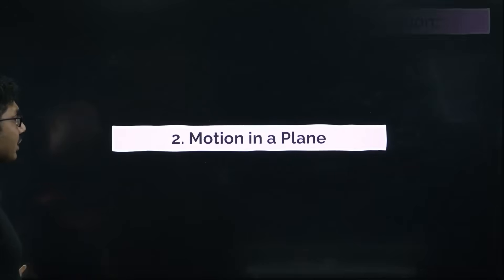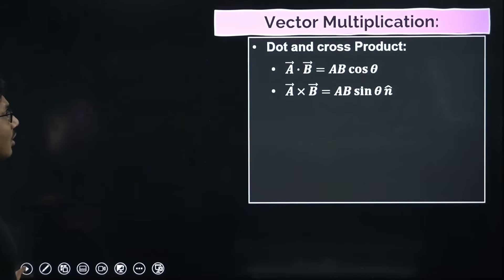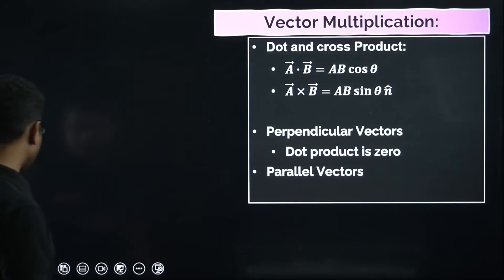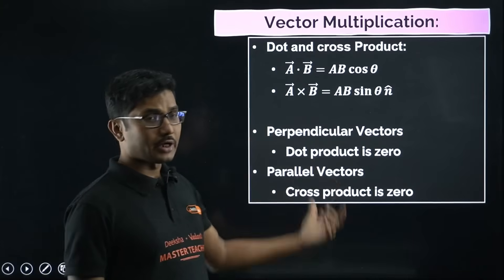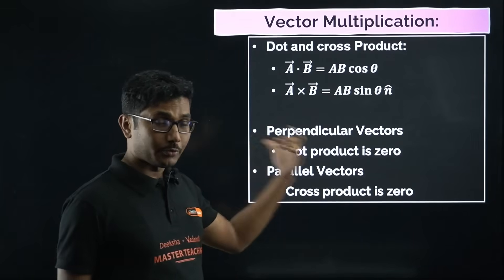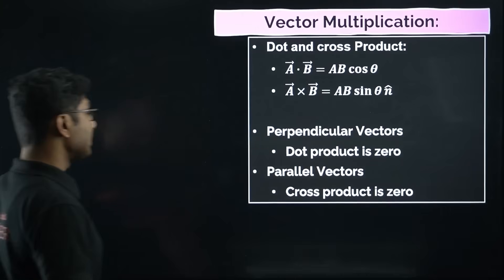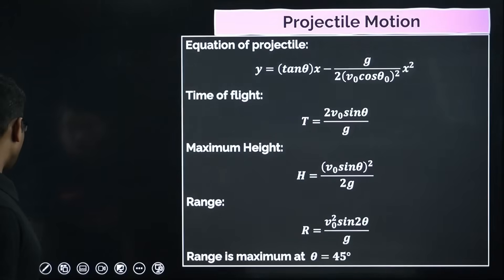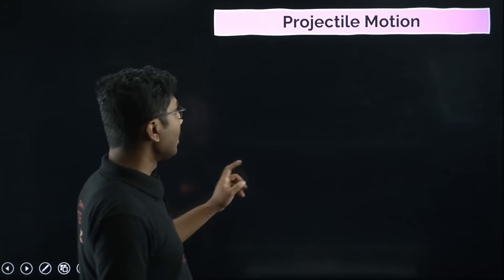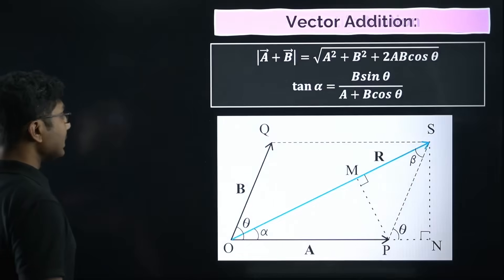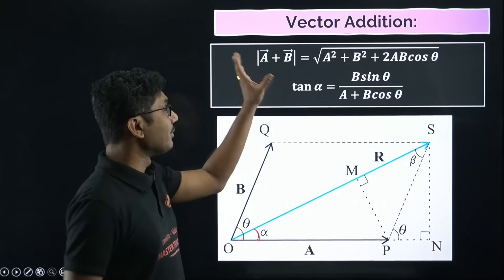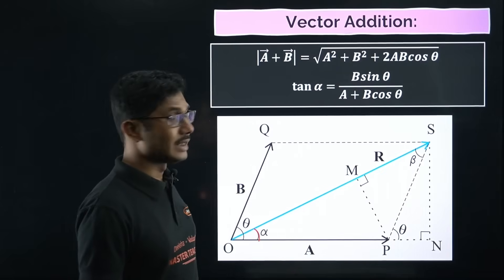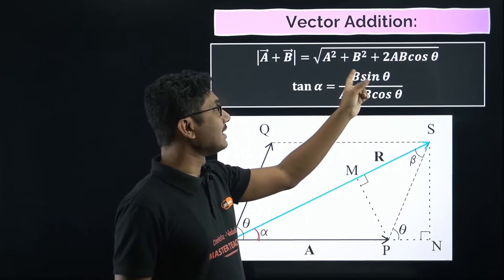What information you get from acceleration-time graph. There are few important cases for graphs - x-t graph for different cases: acceleration positive, acceleration negative, acceleration zero. The common equations of motion - for nth time interval what will be the displacement is also given in this PDF.